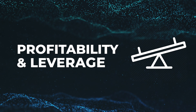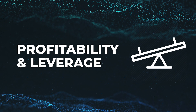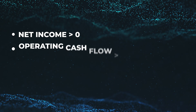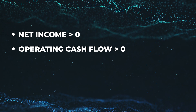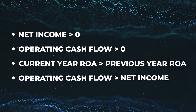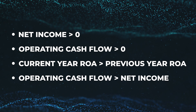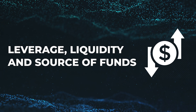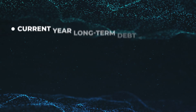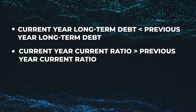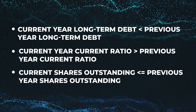First up, in the Profitability section, a company will earn a point if they exhibit positive net income in the current year, positive operating cash flow in the current year, or positive change in return on assets or accruals in the current year. Next up, in the Leverage, Liquidity, and Source of Funds category, a company will earn one point if they exhibit reduction of long-term debt, year-over-year increase in current ratio, or no share dilution.